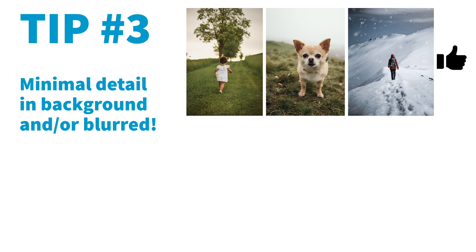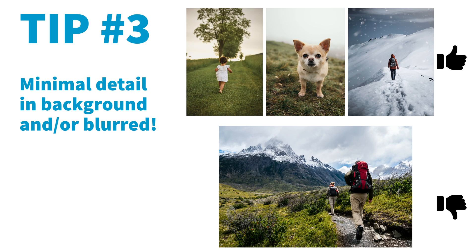Tip number three is about what to do when you can't actually do tips one and two. This isn't to say it's impossible — what you can do is look for backgrounds that at least don't have a lot going on: very minimal details, and a background that's maybe been blurred a little bit. Comparing images, we can see it's almost like there are really only two or three main colors in the background, and the background is maybe a little bit blurry. That's really going to help PowerPoint distinguish between the foreground and background and increase your chance of success.